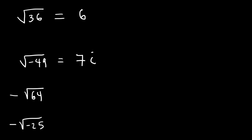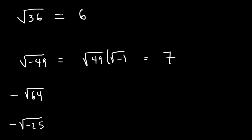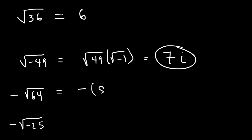Here's how you show your work: separate the 49 and the negative 1. The square root of 49 is 7, and the square root of negative 1 is i, so you get 7i. For negative square root of 64, the square root of 64 is 8, but there's a negative in front, so it's negative 8.